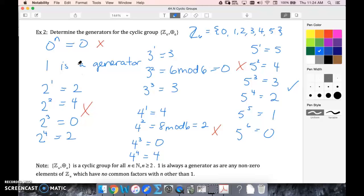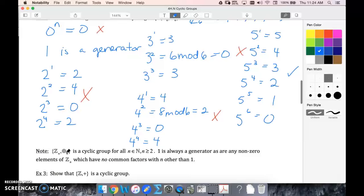Any Z_n mod n over addition is a cyclic group. One is always going to be a generator, and any non-zero elements with no common factors with n other than one will also be generators. You need to check them, of course, but we can eliminate the common factors immediately.